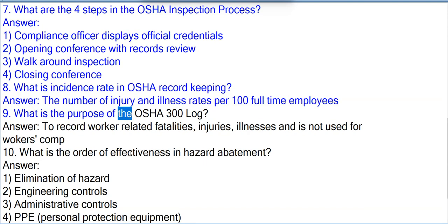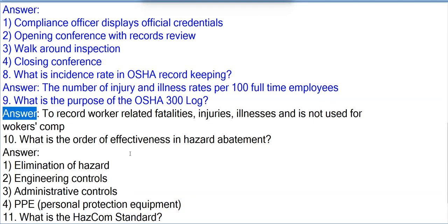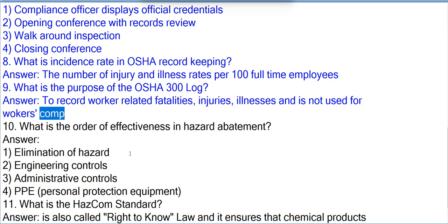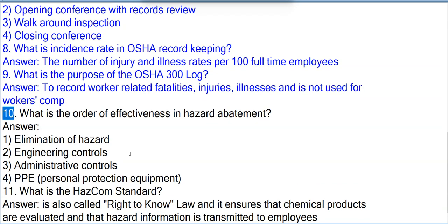Question 9: What is the purpose of the OSHA 300 log? Answer: To record work-related fatalities, injuries, and illnesses. It is not used for Workers' Compensation.